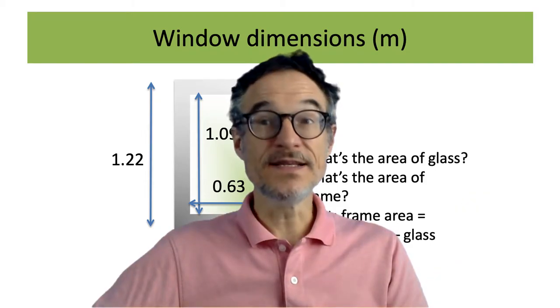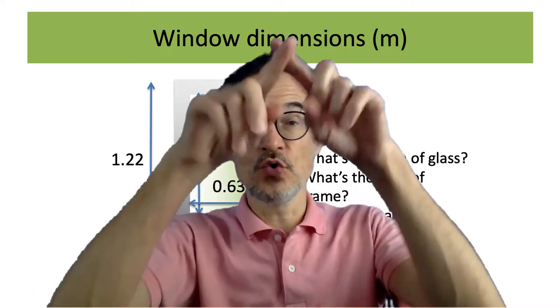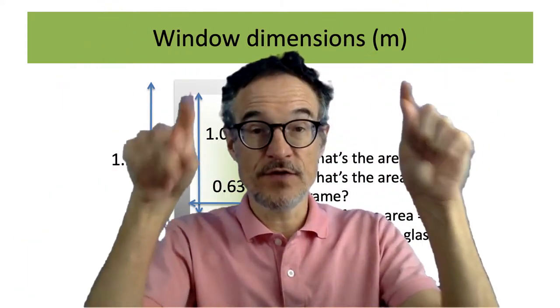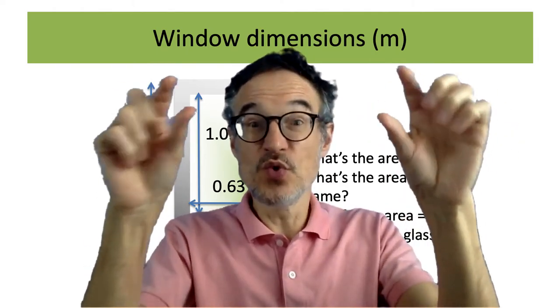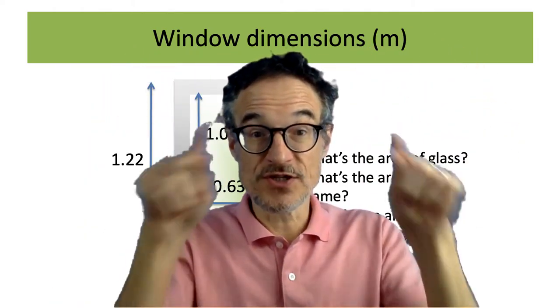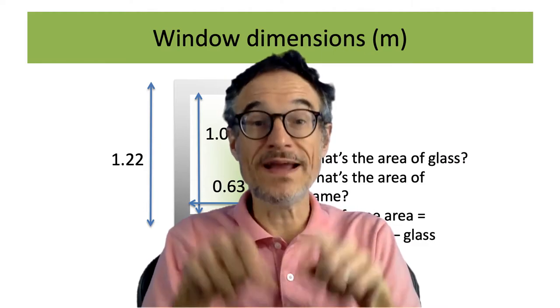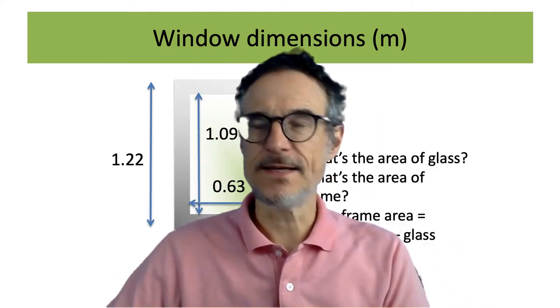Just another hint: the area of the total window is the area of the glass plus the area of the frame. So we don't need to work out the area of the frame, we can just get the whole window and then minus the glass, which makes things a bit easier.